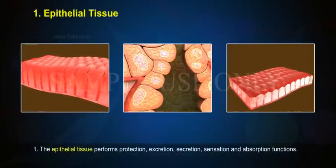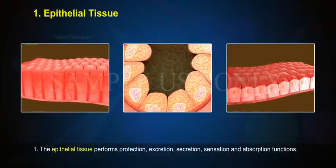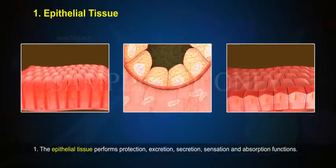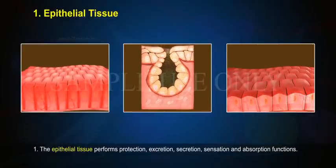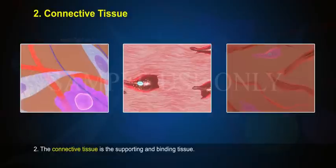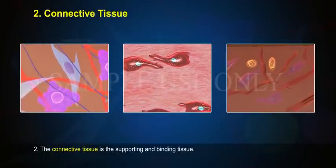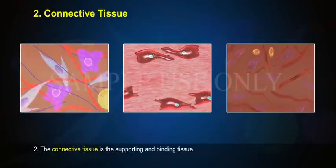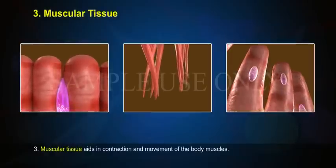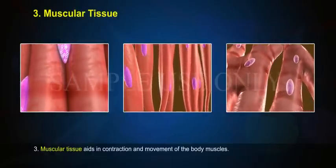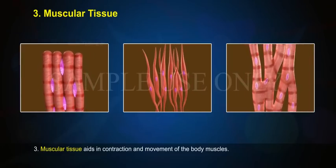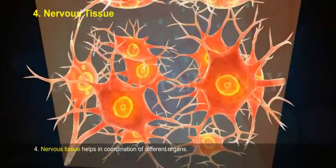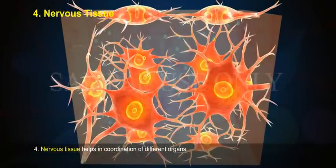The epithelial tissue performs protection, excretion, secretion, sensation, and absorption functions. The connective tissue is the supporting and binding tissue. Muscular tissue aids in contraction and movement of the body muscles. Nervous tissue helps in coordination of different organs.